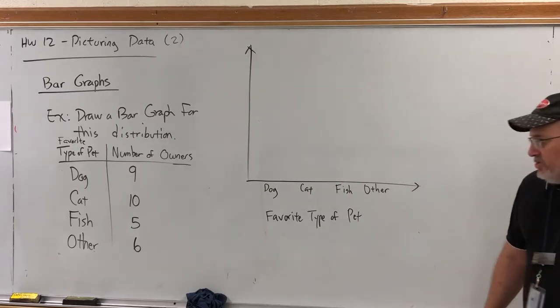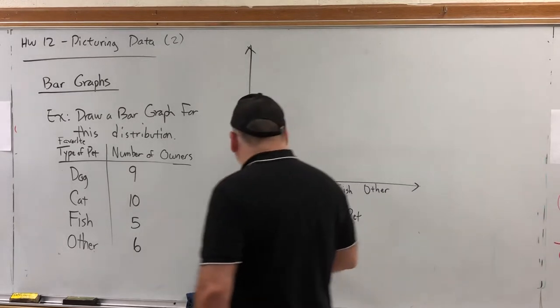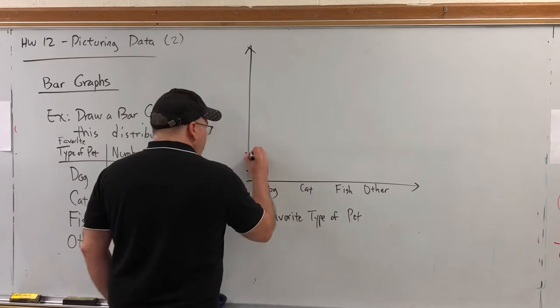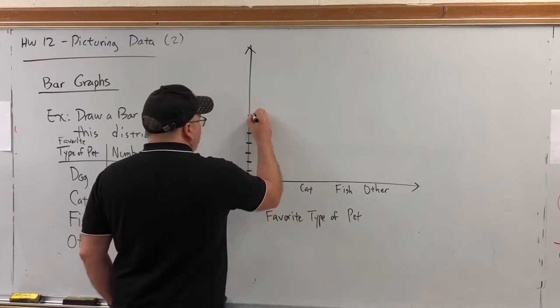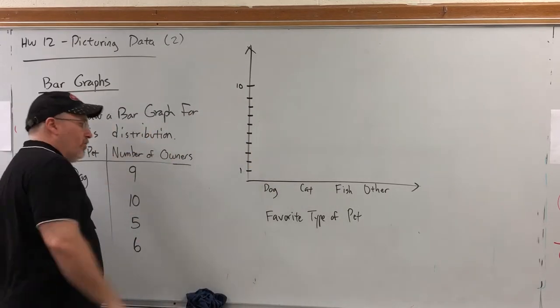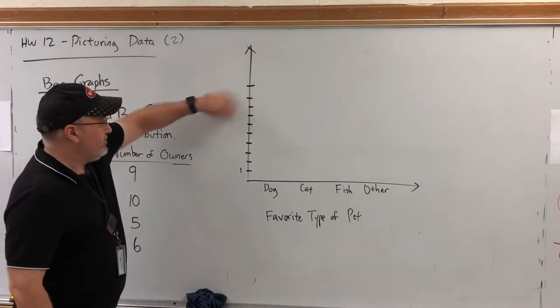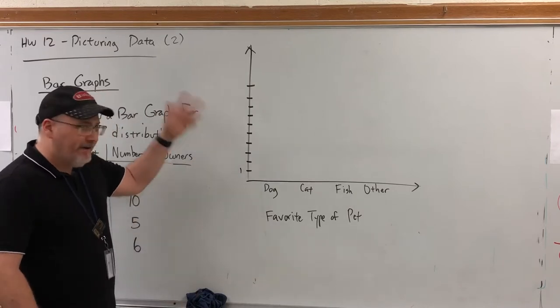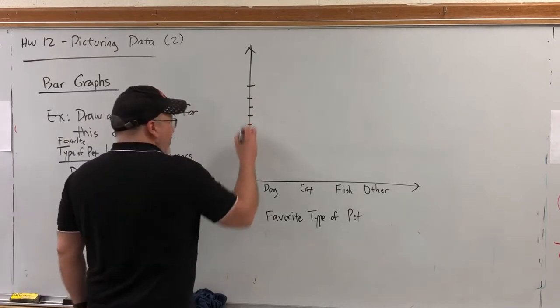And on the vertical axis, you're going to number it. Now, this one goes up to ten. One, two, three, four, five, six, seven, eight, nine, ten. So, one through ten. It's not necessary to number all of them. Actually, it's only necessary to number the first one, because that defines the scale. But we'll go ahead and number all of them.